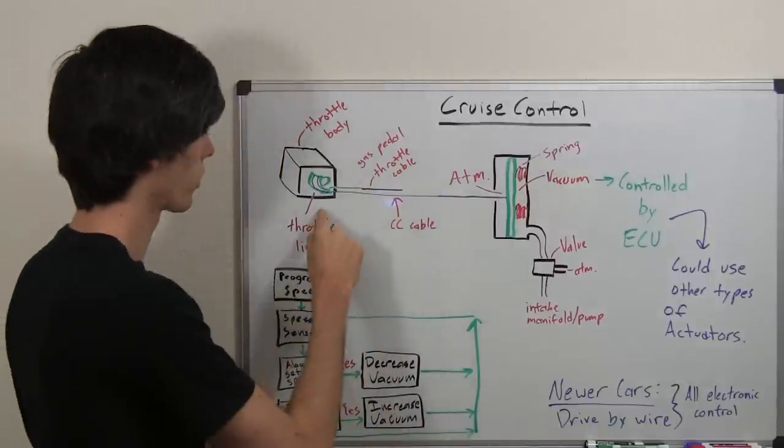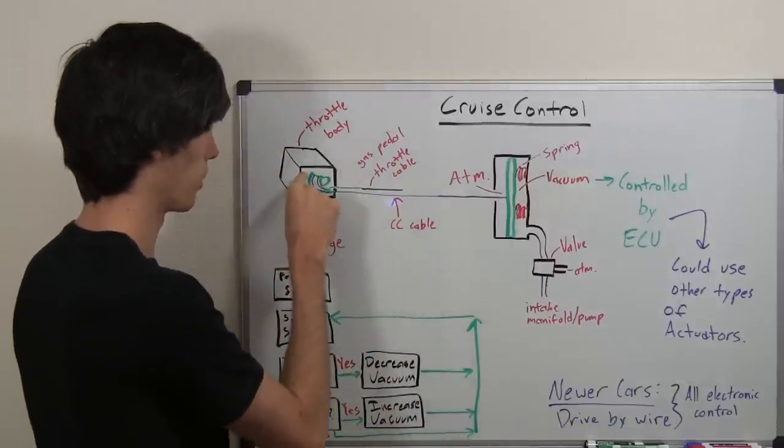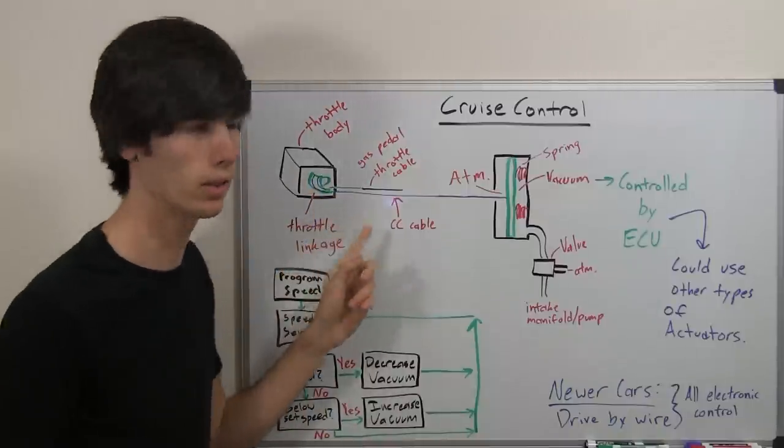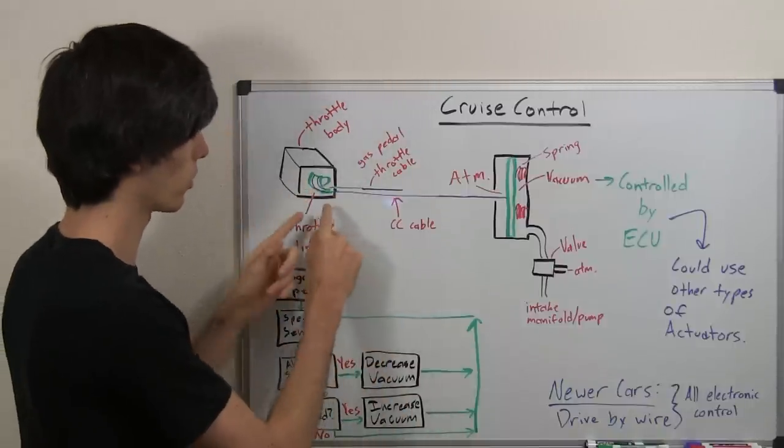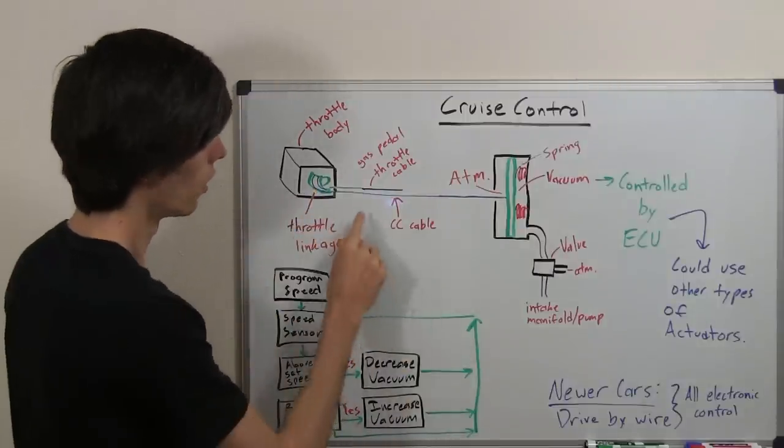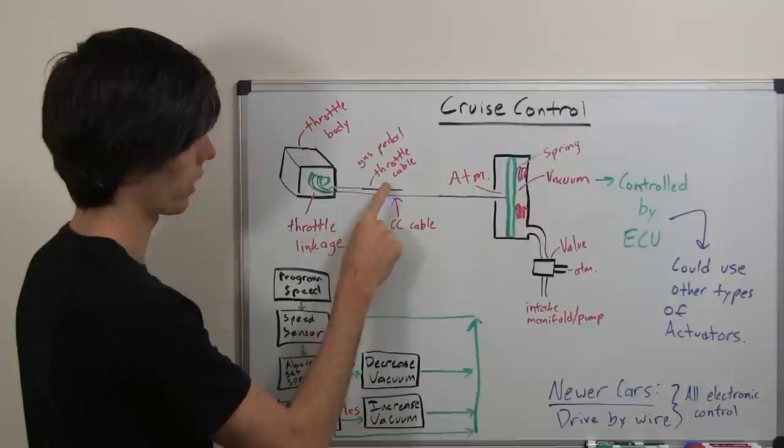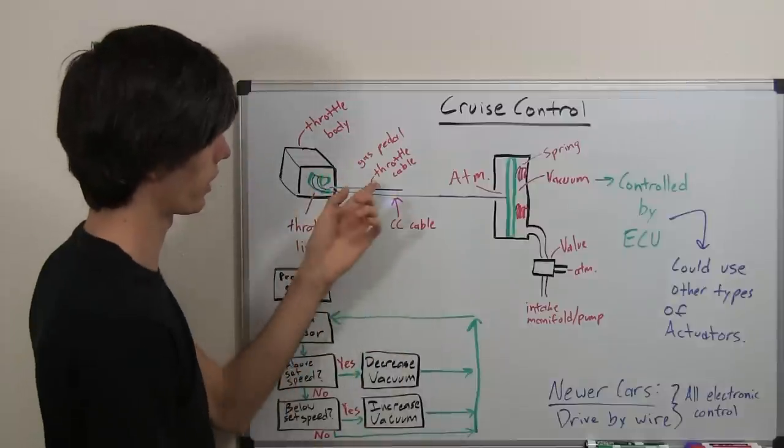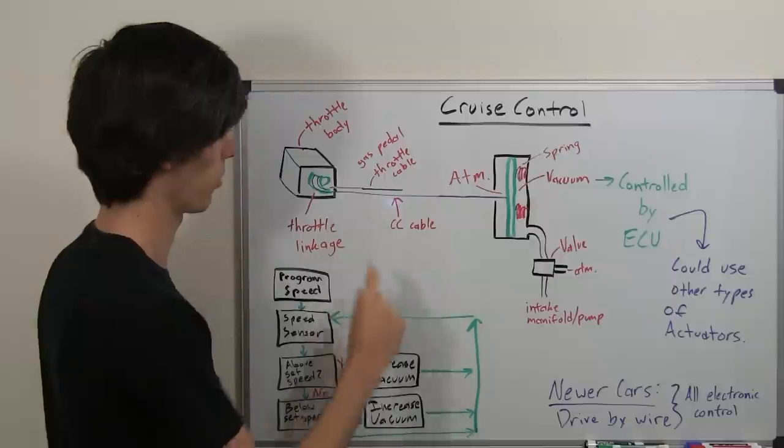So connected to the throttle body, which is connected to the butterfly valve within the throttle body, is a throttle linkage. Now with cars with cruise control there may be two cables connected to the throttle linkage. One is the gas pedal cable, and I have a video explaining that, and the other is this cruise control cable.